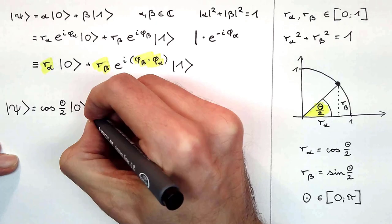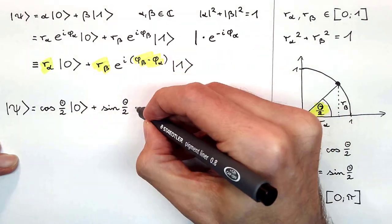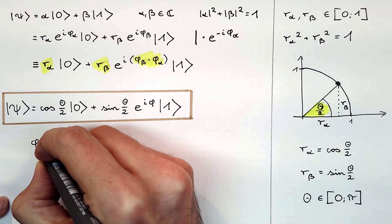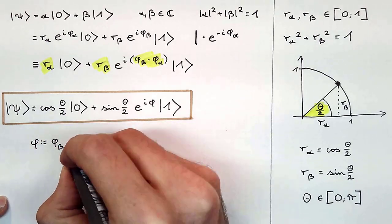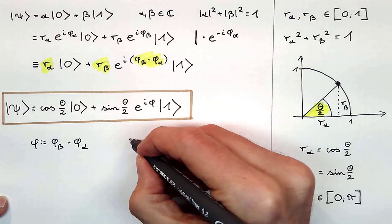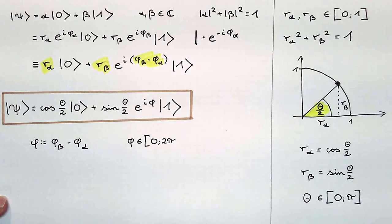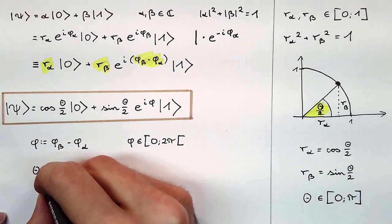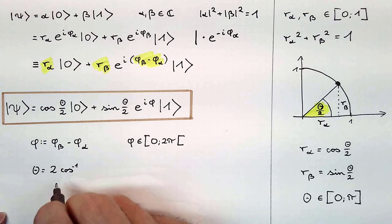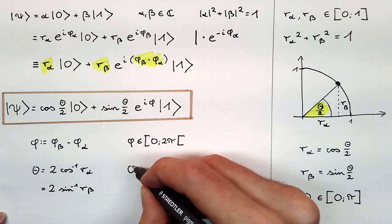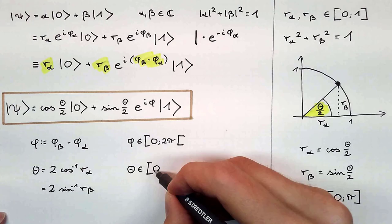We can write psi with only two real parameters, namely phi and zeta. Phi is the difference between phi_beta and phi_alpha, which means the angle between the phases of the complex amplitudes. This angle is between 0 and 2 pi. We exclude 2 pi from the range of allowed values because it corresponds to an angle of 0 and 0 is already in our range. Zeta can be calculated with the inverse trigonometric functions of sine and cosine. So zeta is 2 times the arccosine of r_alpha or 2 times the arcsine of r_beta. And let me notate again that zeta lies between 0 and pi.